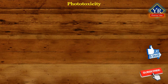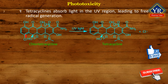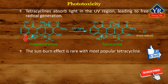Phototoxicity of tetracyclines. Certain tetracyclines, most notably those with a C7 chlorine, absorb light in the visible region, leading to free radical generation and potentially causing severe erythema to sensitive patients on exposure to strong sunlight. Patients should be advised to be cautious about such exposure for at least their first few days to avoid potentially severe sunburn. This effect is comparatively rare with most currently popular tetracyclines.